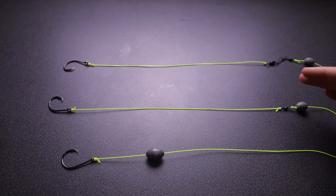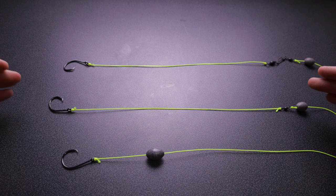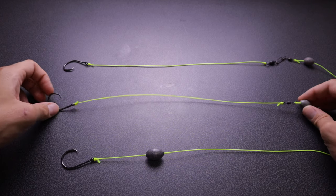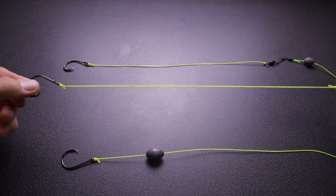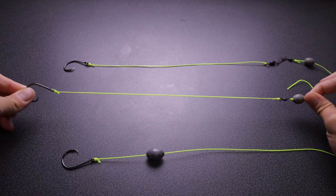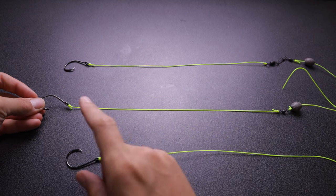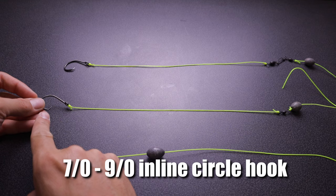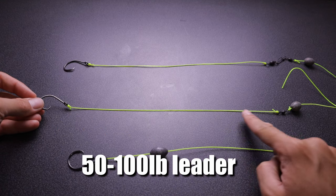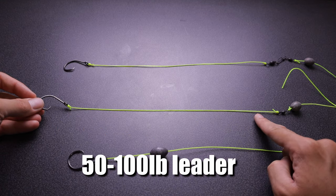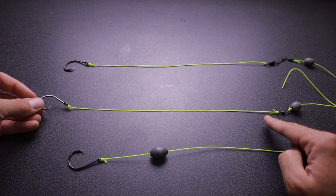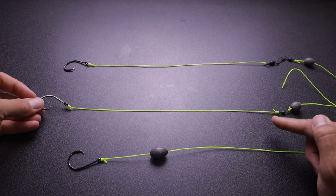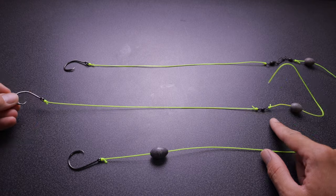Okay, next we have the rig we probably use the least but it's one of the most popular rigs, and that is your traditional fish finder rig. All it is is a seven to nine aught hook tied to anywhere from 50 to 100 pound leader depending on the size of gags you're targeting.